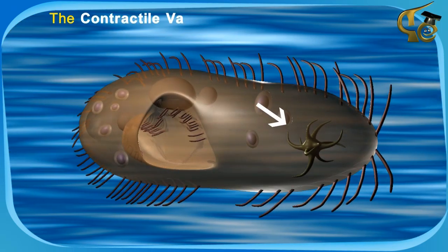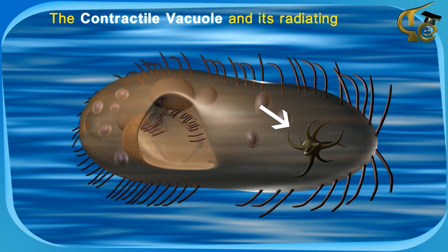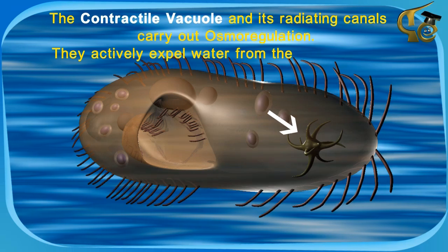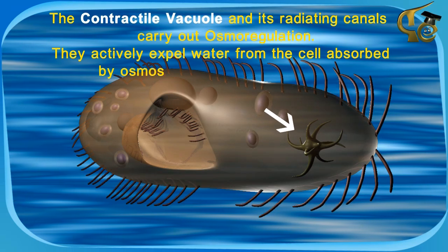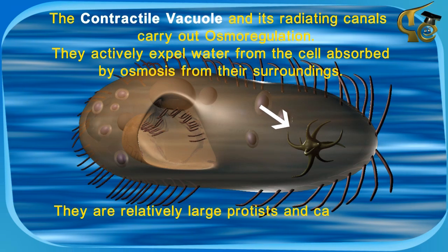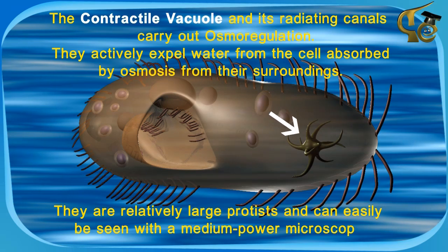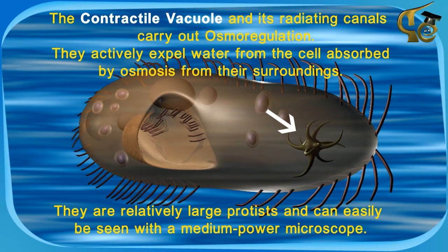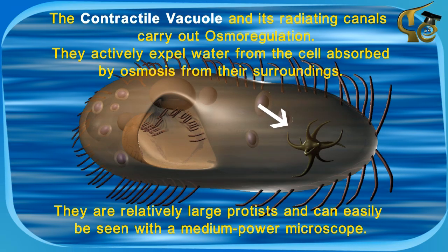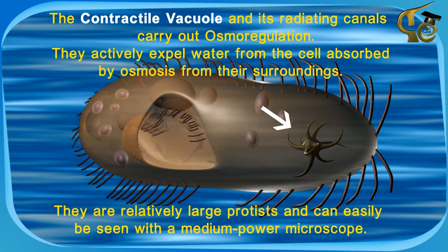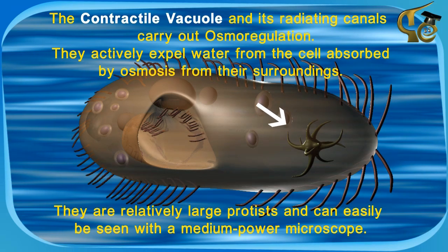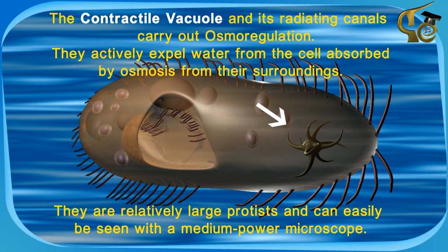The contractile vacuole and its radiating canals carry out osmoregulation. They actively expel water from the cell absorbed by osmosis from their surroundings. Paramecia are relatively large protists and can easily be seen with a medium power microscope.